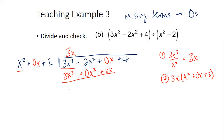When we subtract, we change signs and combine. This becomes a negative, this becomes a negative, this becomes a negative. The reason why you're changing signs is because you're distributing that negative — it has to go to all of them. When we combine: this term is eliminated, which is the goal. We get negative 2X squared, then 0 minus 6X which makes it negative 6X. Then we bring down.